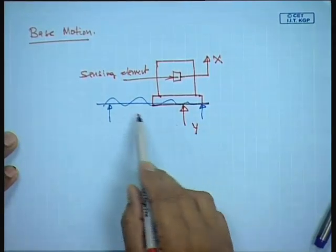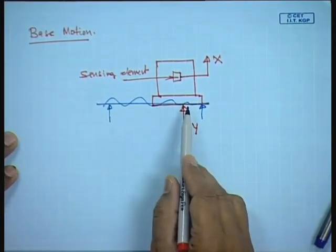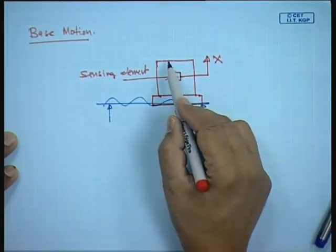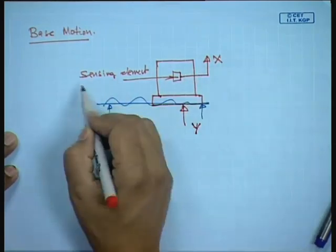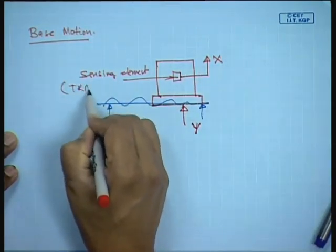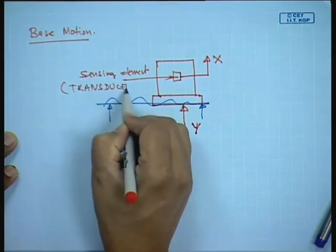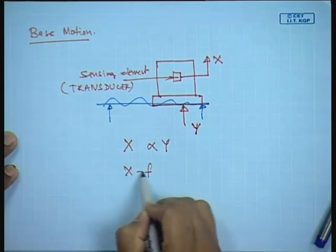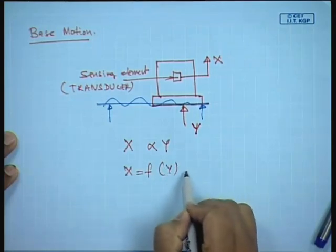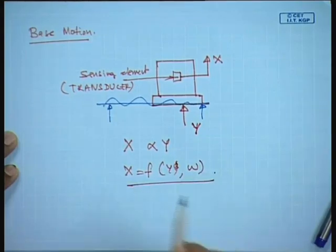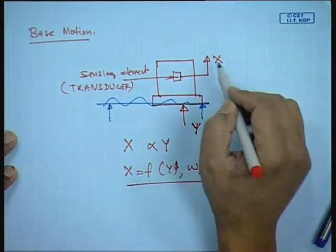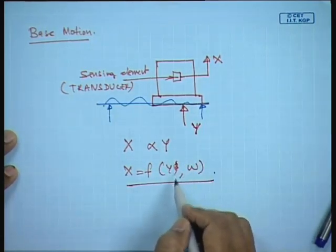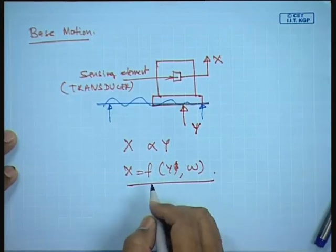Typically when we have a vibrating surface we try to know what y is. We put a sensing element x, which is essentially housed in a transducer. The question is whether x is proportional to y, and what is the relationship between x and y as a function of frequency. Once I can measure x, I know how it is related to y — that is what we are going to study in base excitation.